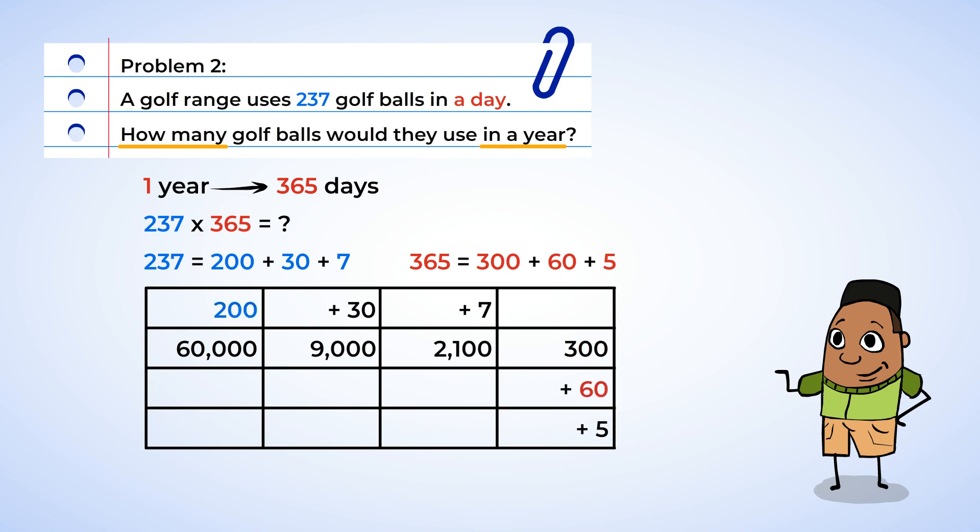200 times 60. Well, that would be 12,000, and 30 times 60 is 1,800. Now, 7 times 60, 420. Last row already?